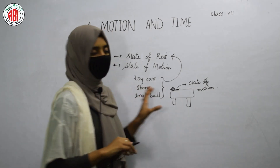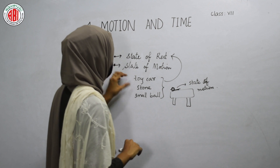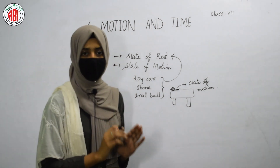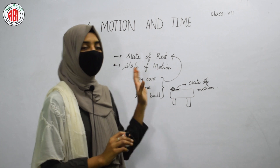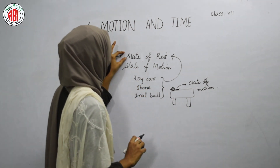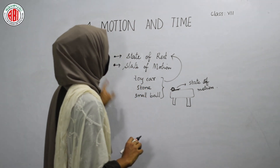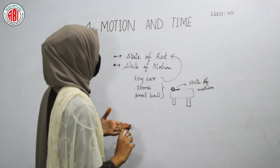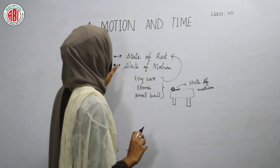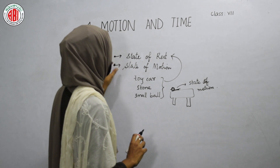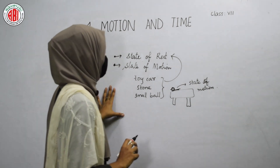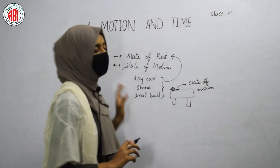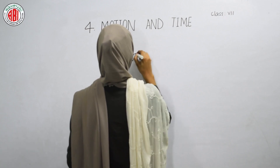By this activity we can understand that when we place things on a table and they remain in their own position, they are in the state of rest. But if they move from one position to another — if they change their position — then they are said to be in the state of motion. This is the difference between the state of rest and the state of motion.